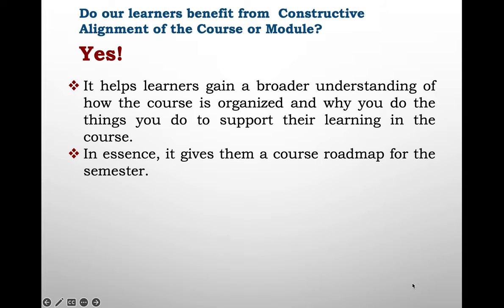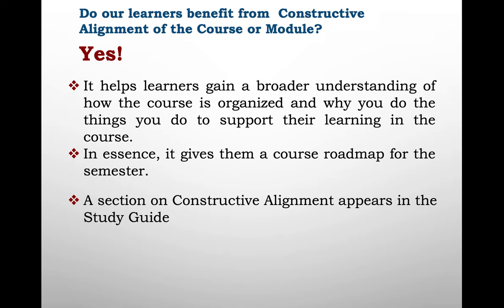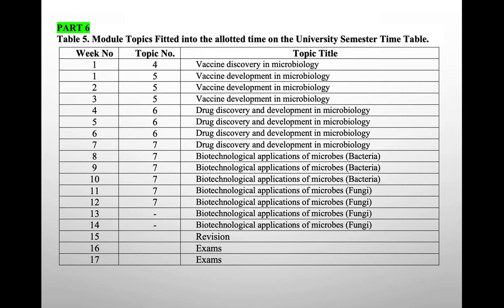Learners benefit from the constructive alignment of the course and use it as a map to guide their learning. In part six, we align the topics we have into the weeks where teaching is done. The university semester has about 14 weeks of teaching followed by approximately four weeks of examinations. We align our topics to fit in the university semester timetable — some topics take only one week, others may take more than one week, and in some weeks you may cover two or more topics.